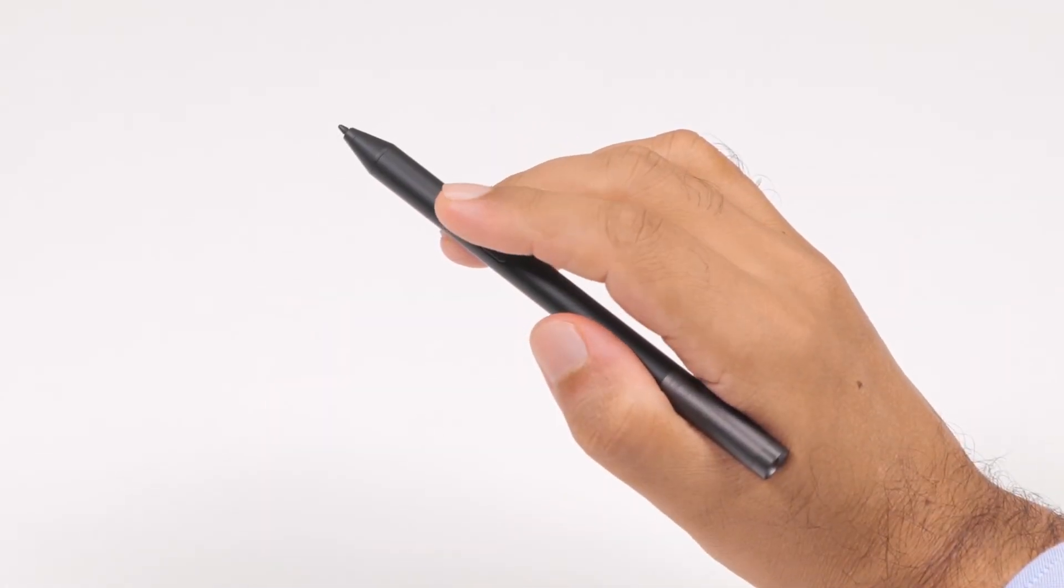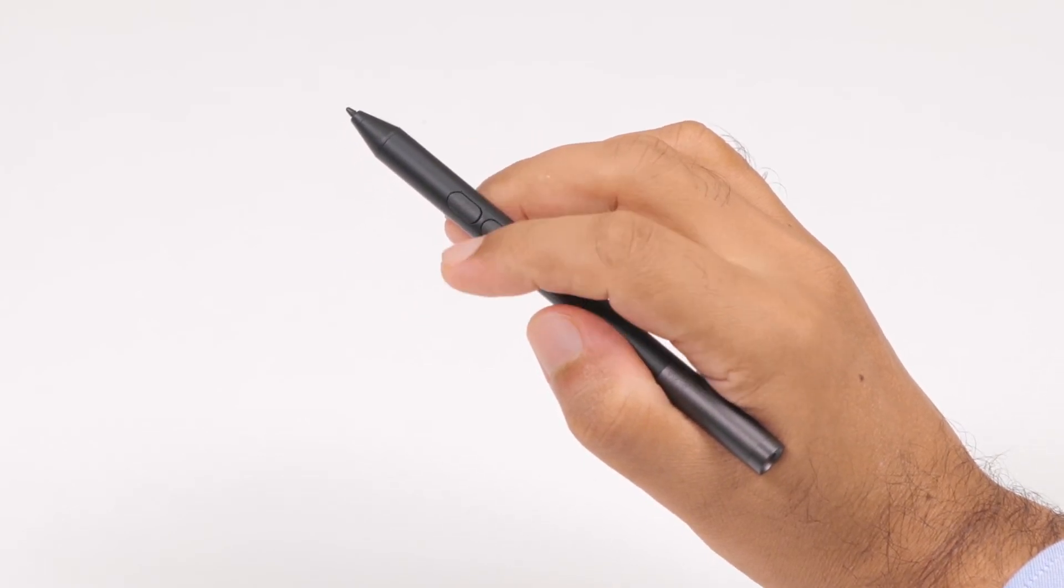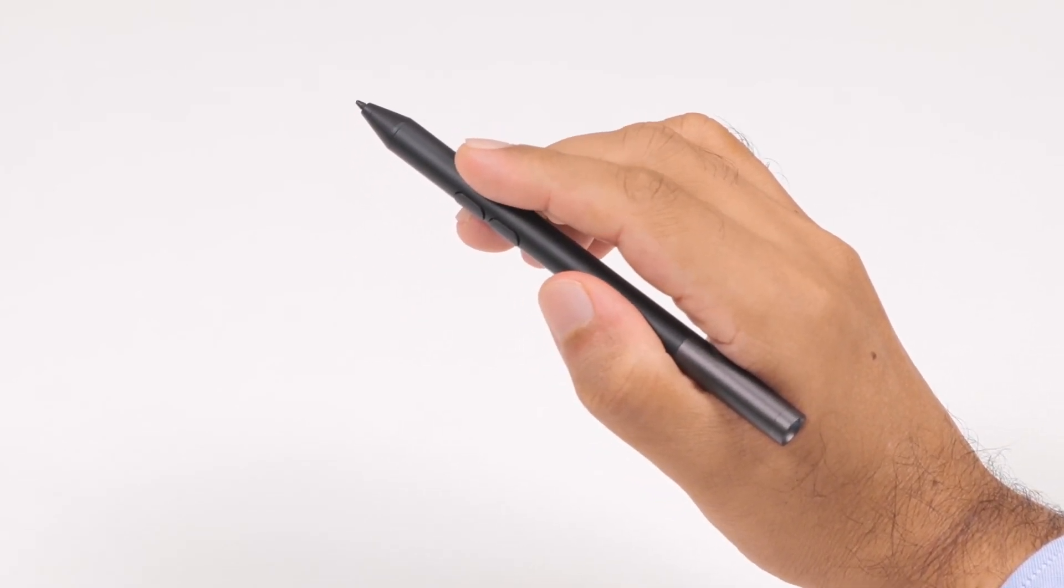To use the Active Pen, hold it like you would a regular pen or pencil. However, hold the pen in a way to not accidentally press the two buttons while drawing.